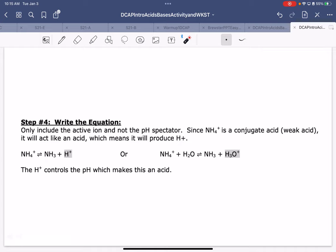Then, you need to write the equation. We're only interested in the part that is actually engaging in the reaction. Spectator ions are not in this. Since NH4+ is a conjugate acid, it will act like an acid, which means it produces H+, and that's why you've got to know what you're working with. NH4+ produces NH3 and H+, or I can write it H3O+. The H+ controls the pH, which makes it an acid.